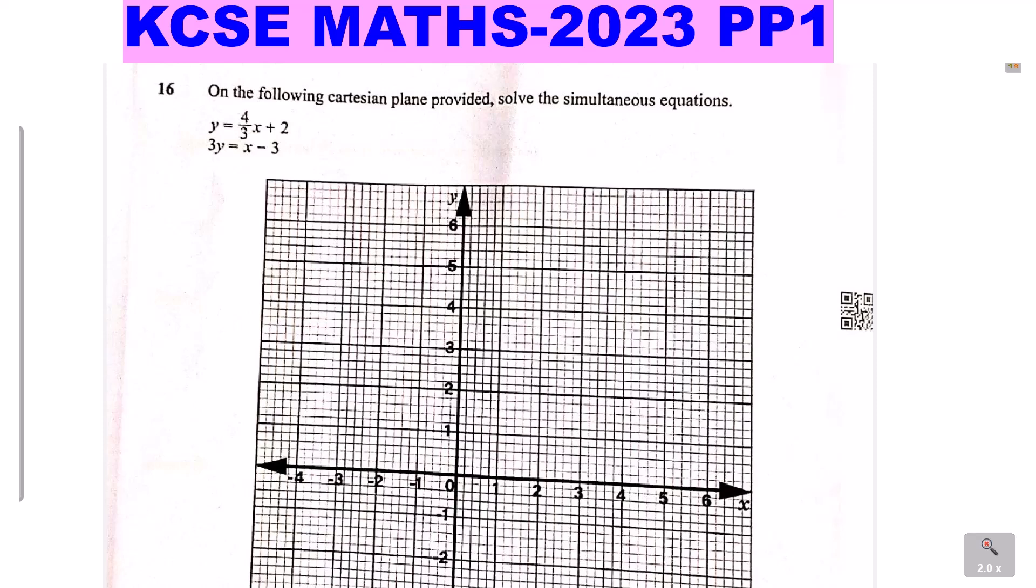So we start with the first one. For us to draw a straight line using the equation, we need at least two points. And let me start with the first one. So the first one is y is equal to 4/3x plus 2. So we prepare a table where I will require to have at least two points. You should be very keen with the points that you use.